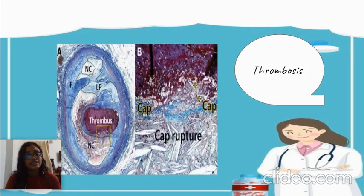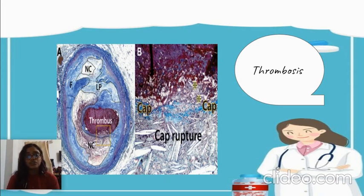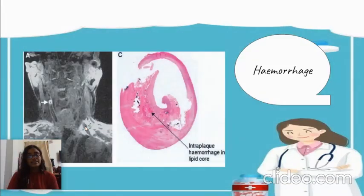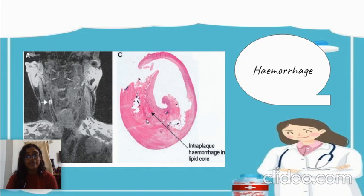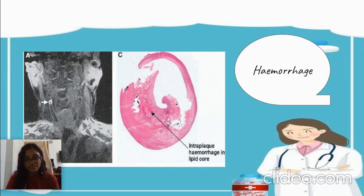The next complicated change is thrombosis. Thrombosis can be superimposed or it can be mural thrombosis. It occurs in areas of endothelial damage or over an ulcerated plaque as seen before. Next is hemorrhage — hemorrhage is from the rupture of the capillaries, the small blood vessels supplying the atheroma, or blood can enter through ulcerated surfaces.